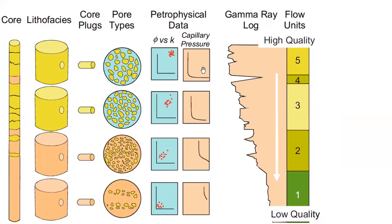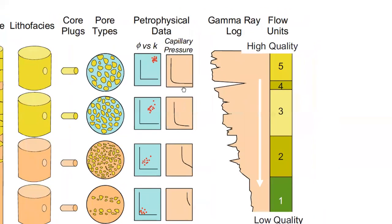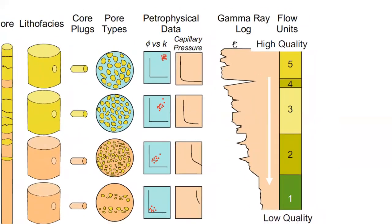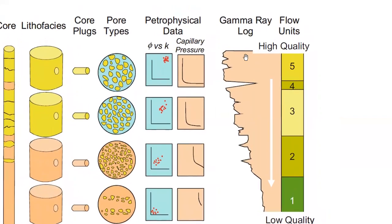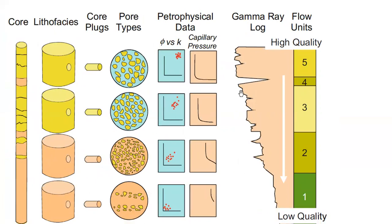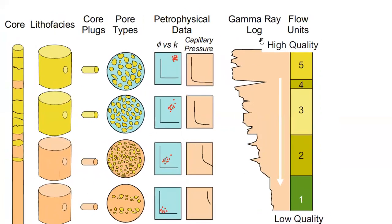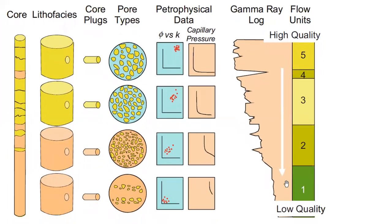We can also create the capillary pressure plot — we will learn about this in the next few weeks. We also check the gamma ray, and the trend shows that the classes are clearly different. From the gamma ray log we can clearly see that they are different.